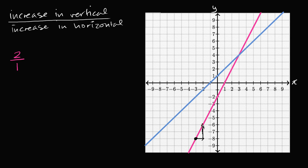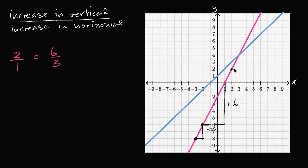Let's verify this. If instead I increase in the horizontal direction by three — so plus three horizontal — to get back on the line, I have to increase in the vertical direction by six. So when I increase by three horizontally, I increase by six vertically. Two over one equals six over three, both equal two. No matter where I start on this line, I increase twice as much in the vertical direction as in the horizontal.